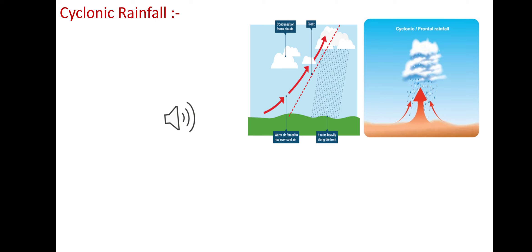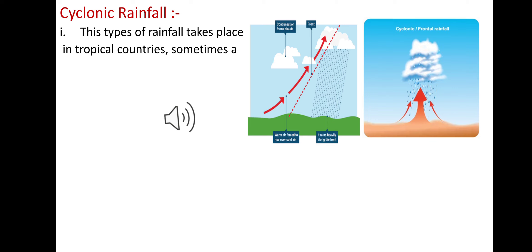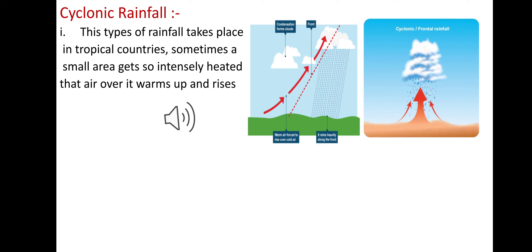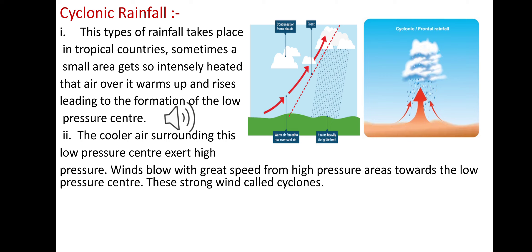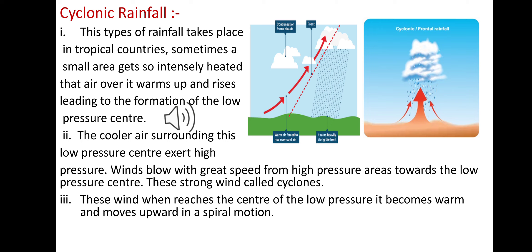Our next point is cyclonic rainfall. This type of rainfall happens in tropical countries. Sometimes a small area gets so intensely heated that air over it warms up and rises, leading to the formation of a low pressure center. The cooler air surrounding this low pressure center exerts high pressure, and winds blow with great speed from these high pressure areas toward the low pressure center. These strong winds are called cyclones.